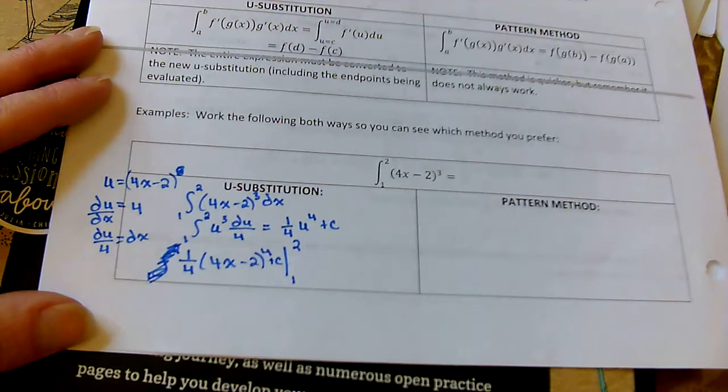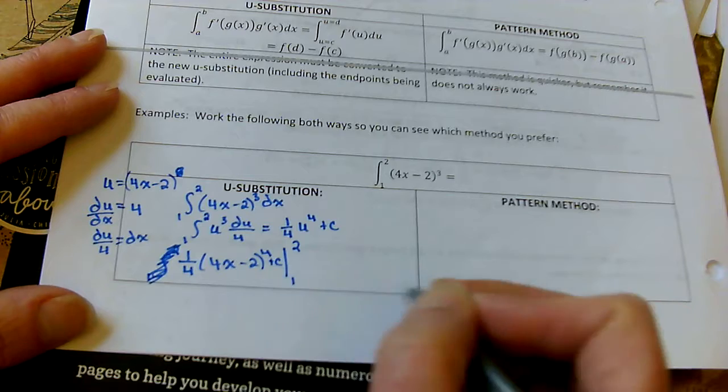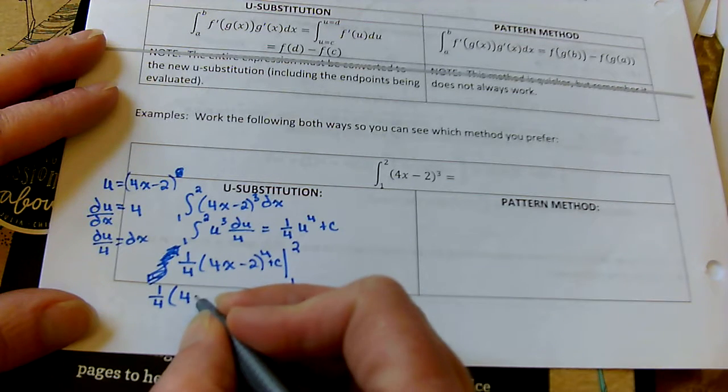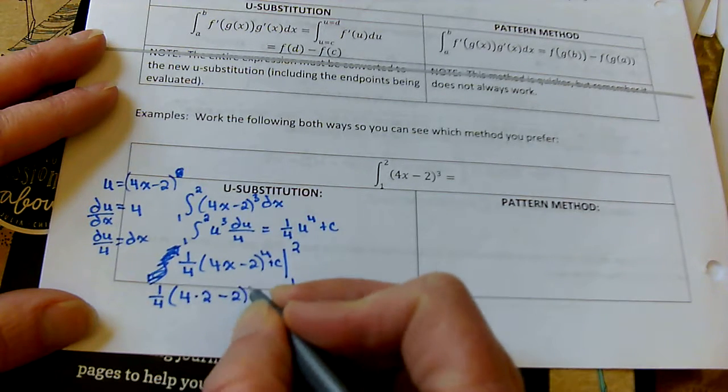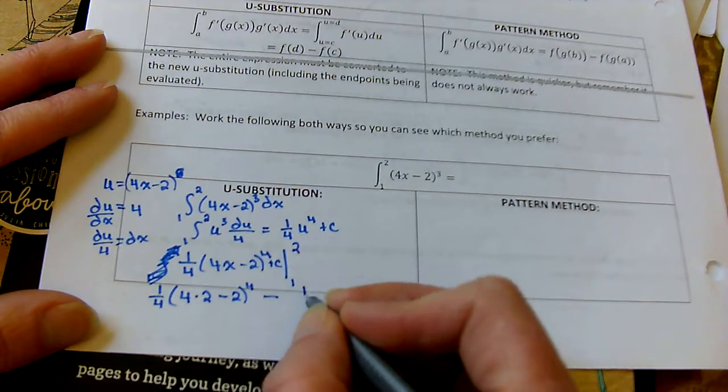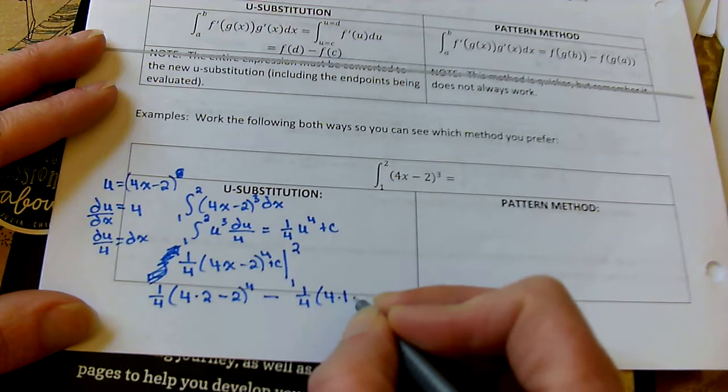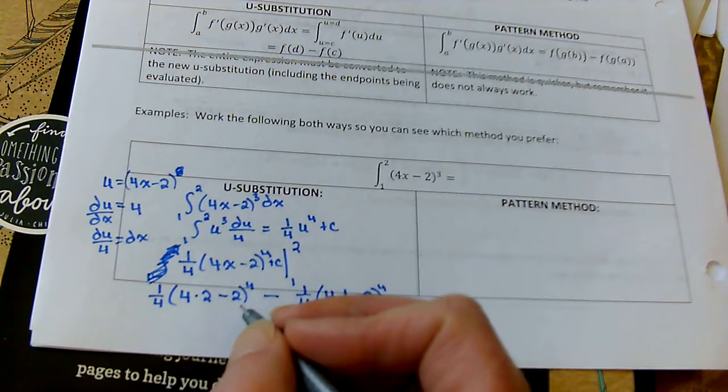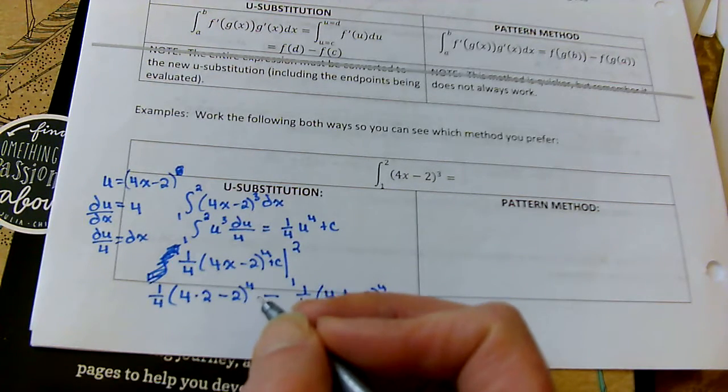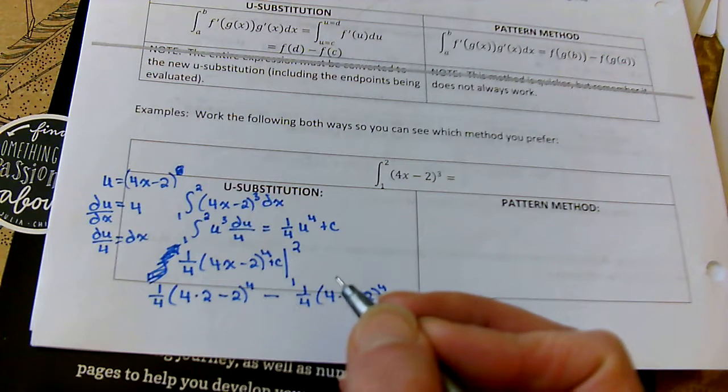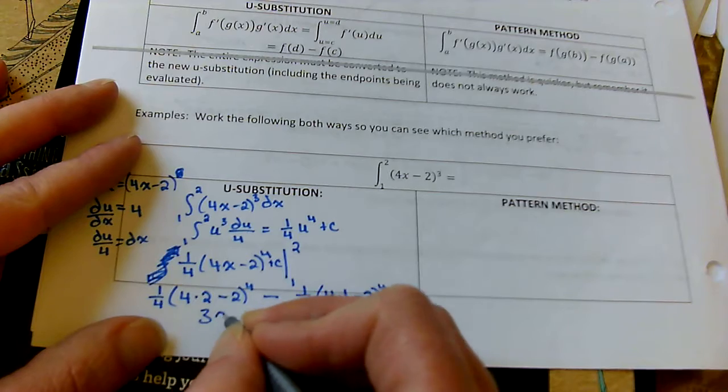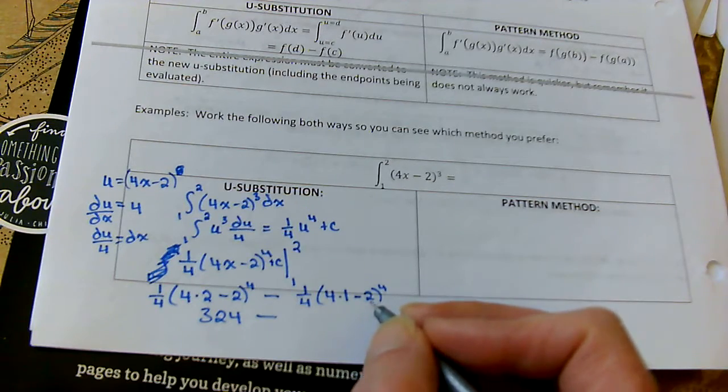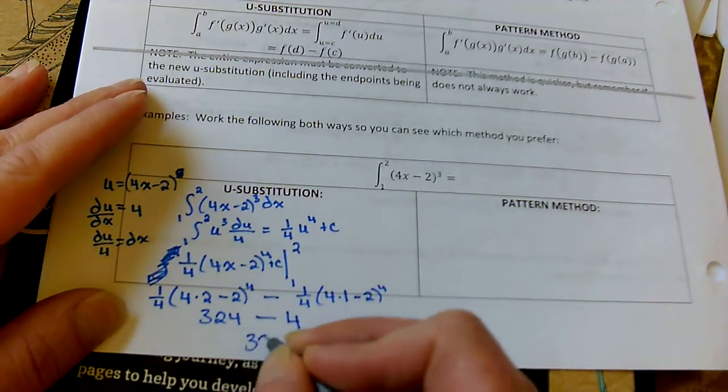So, by going ahead and re-substituting in your original U, now you can just plug in 2 for X minus plugging in 1 for X. So, 1/4 times (4 times 2 minus 2) to the 4th. Don't need to worry about the c. 1/4 times (4 times 1 minus 2) to the 4th power. 8 minus 2 is 6 to the 4th divided by 4 is 324 minus 4 minus 2 is 2 to the 4th is 16 minus 4 is 320.